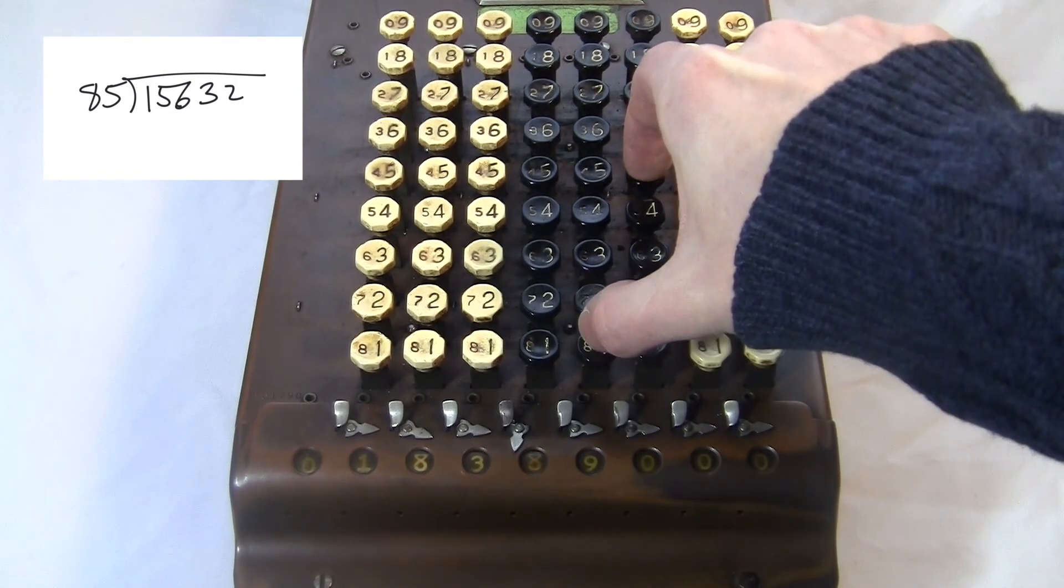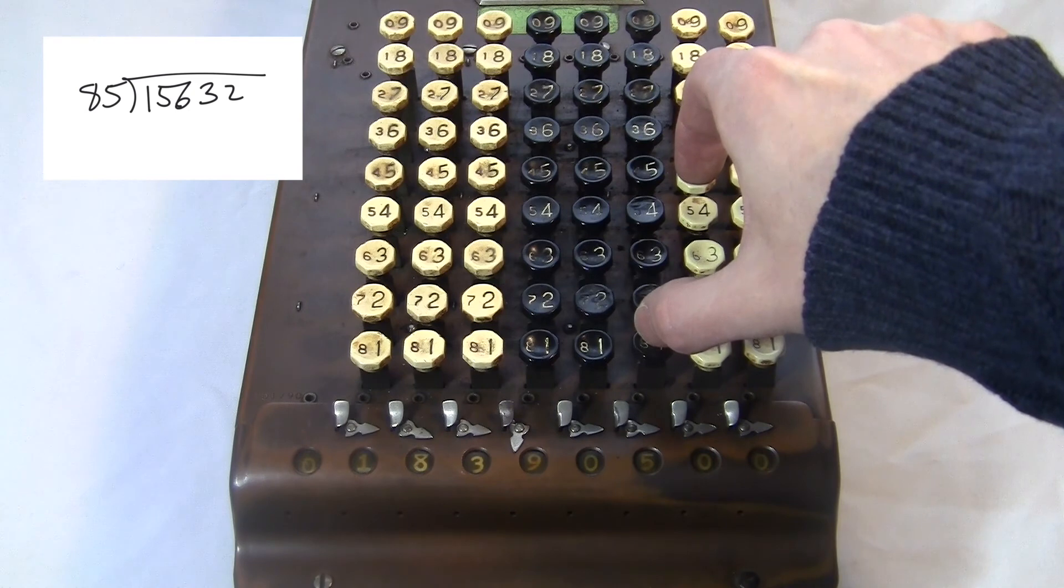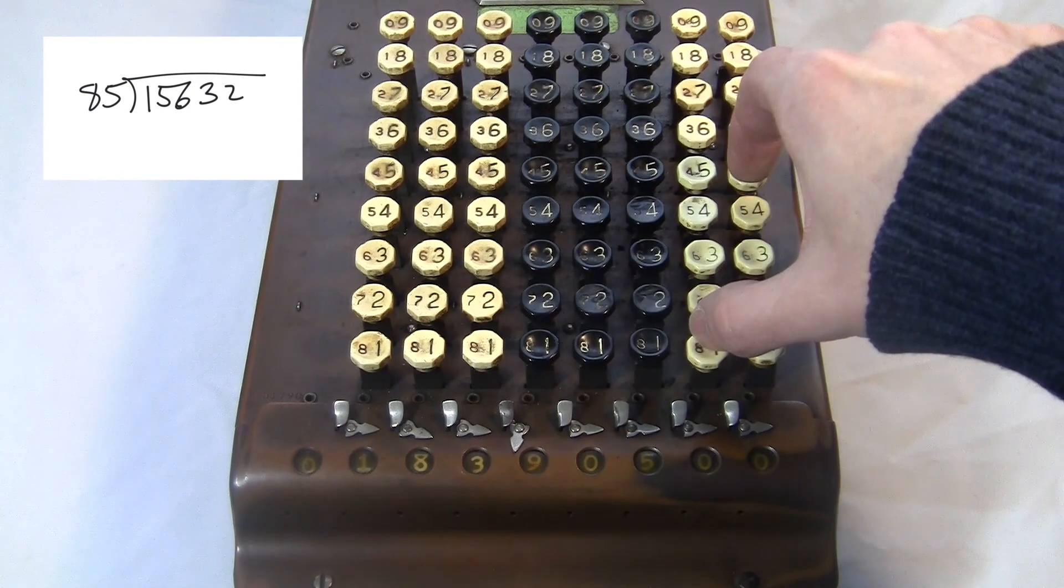Actually, I'm going to do one more because the remainder right now is 90, which is more than 85. Now I move over. I see zero, so I don't do anything in this digit. Now I move over. I see five, so I subtract five times.